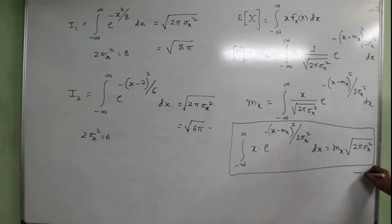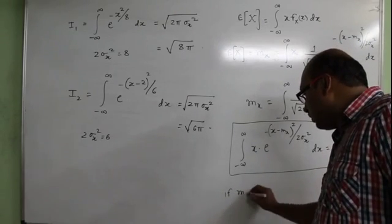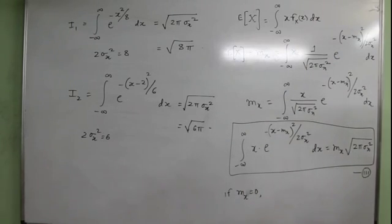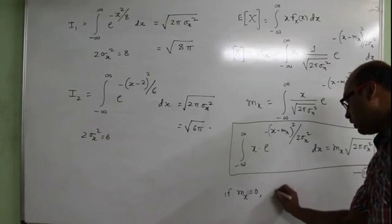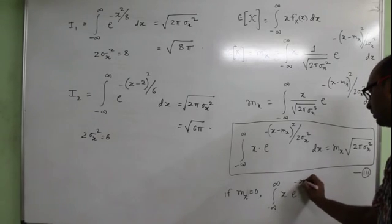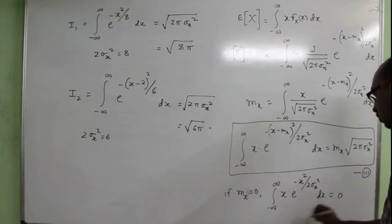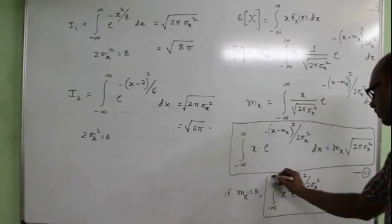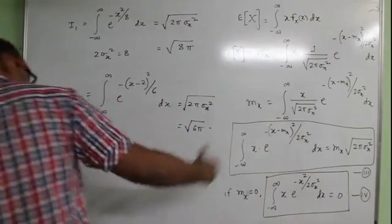This is the third result. If M_X equals 0, meaning Gaussian PDF with zero mean, then the integral of X times e to the power minus X squared divided by 2 sigma_X squared equals 0. This is the fourth result.